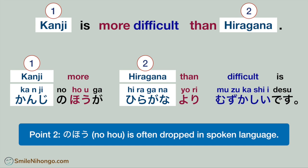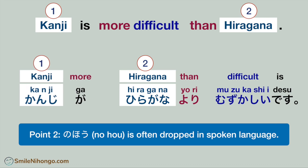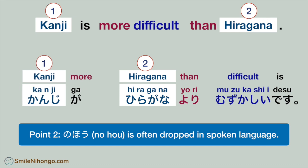Point number two: 'no hou' is often dropped in spoken language. In conversation, you may notice that native speakers often drop this part and say the sentence like this: 漢字がひらがなより難しいです。 Because of 'yori' in the sentence, it still shows that you are comparing two things, and 'kanji ga' at the beginning still means 'kanji is more.' Native speakers tend to drop 'no hou' only because it's shorter and easier to say.